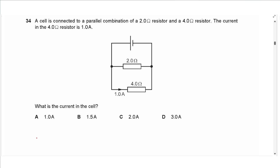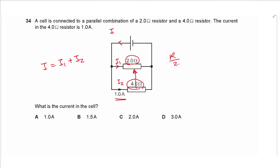Question 34: A cell is connected to a parallel combination of a 2 Ω and a 4 Ω resistor. The current in the 4 Ω resistor is 1 A. Since voltage is the same across parallel branches and current is inversely proportional to resistance, the 2 Ω resistor (half the resistance) carries 2 A. Total current from cell = 1 + 2 = 3 A. Answer is D.